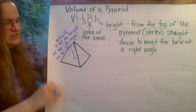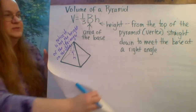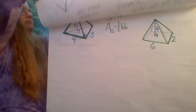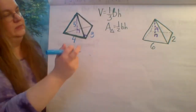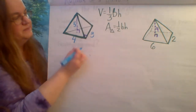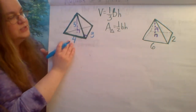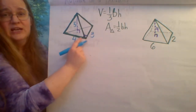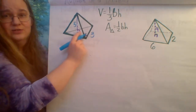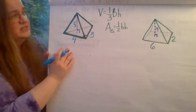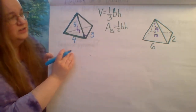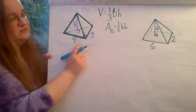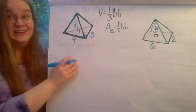So let's take a look at some problems. This first one, the base shape is a triangle, and since it's a triangle, the area of the base is going to be one-half base times height.